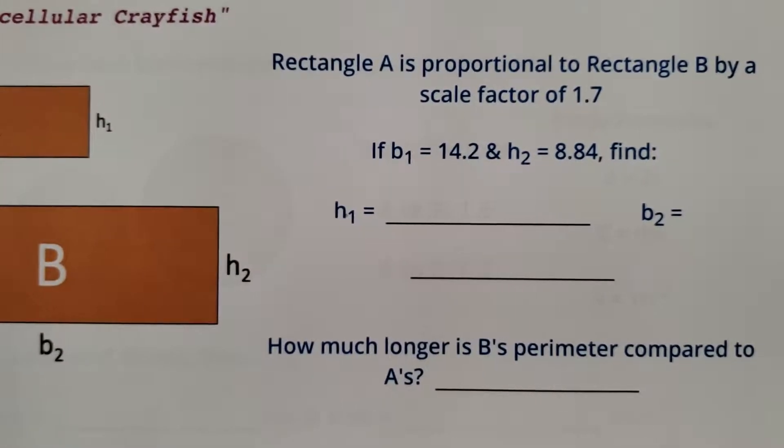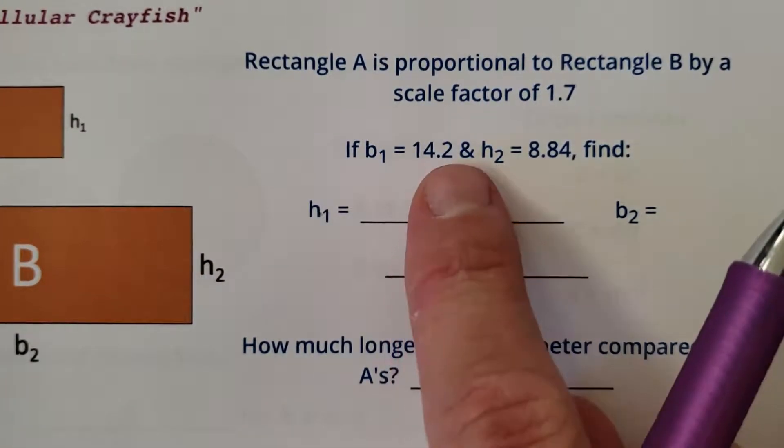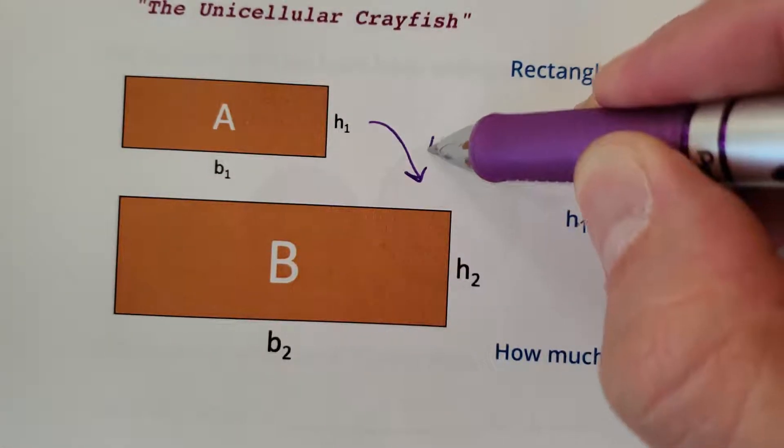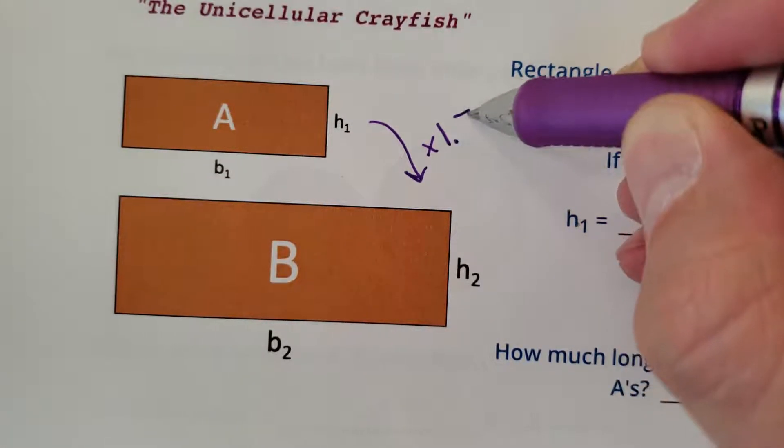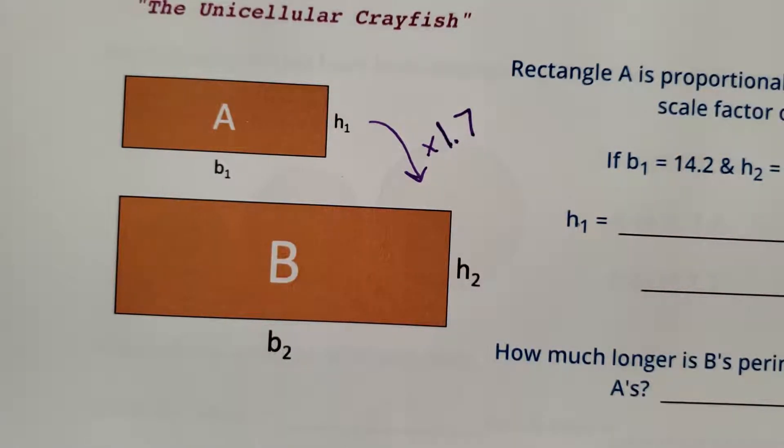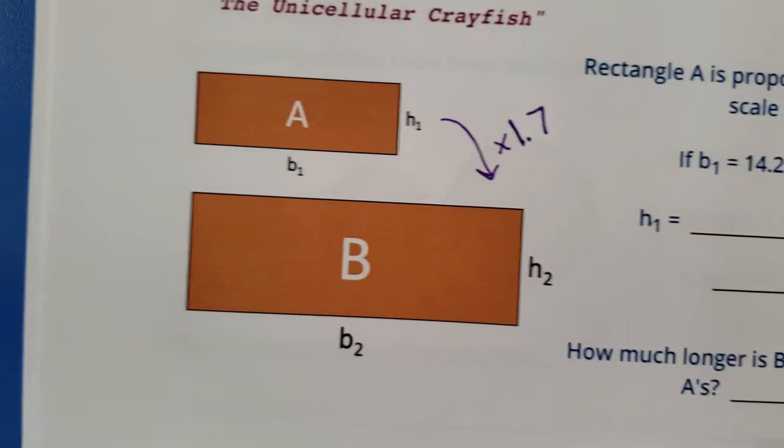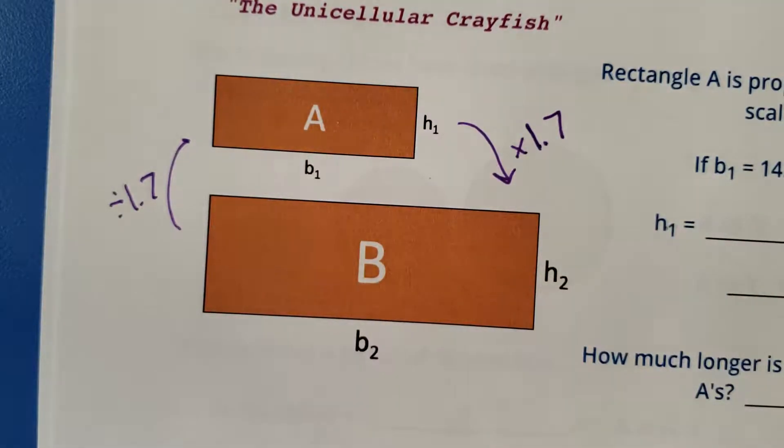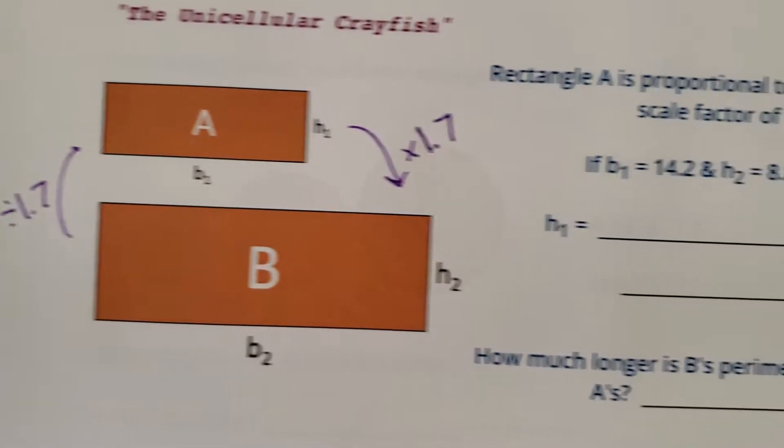Rectangle A is proportional to rectangle B by a scale factor of 1.7. Oh, nice. So they already give you, and by they I mean me, it already gives you the scale factor of 1.7. Nice. So going this way is times 1.7. Going backwards is divide by 1.7. Thanks for the scale factor, bro.